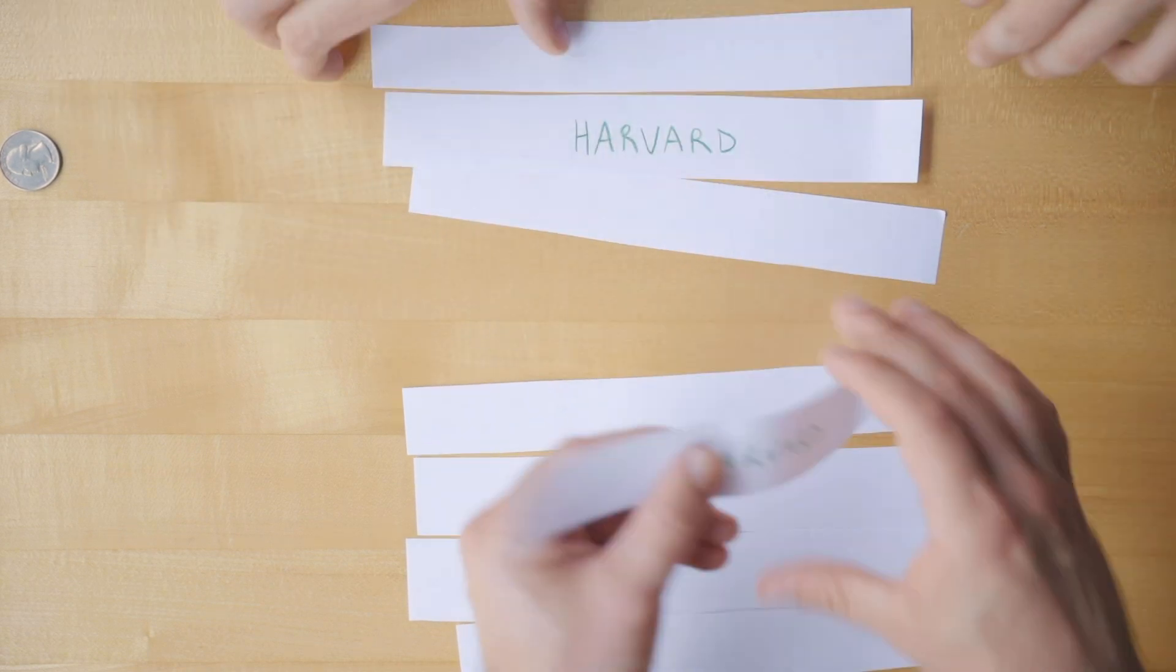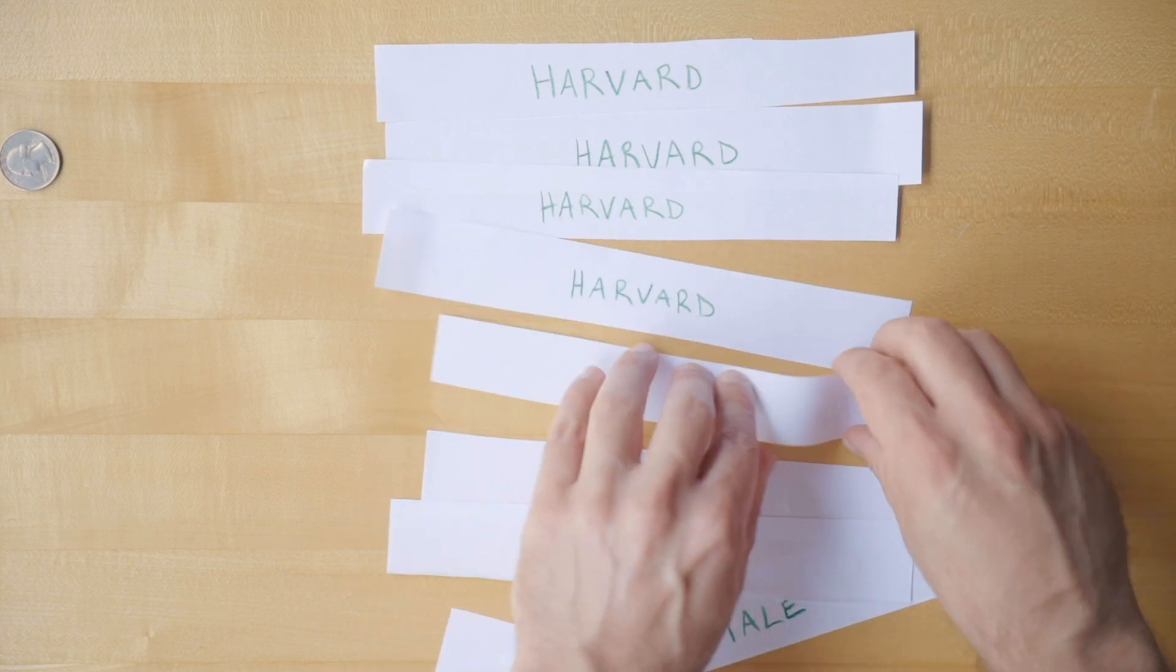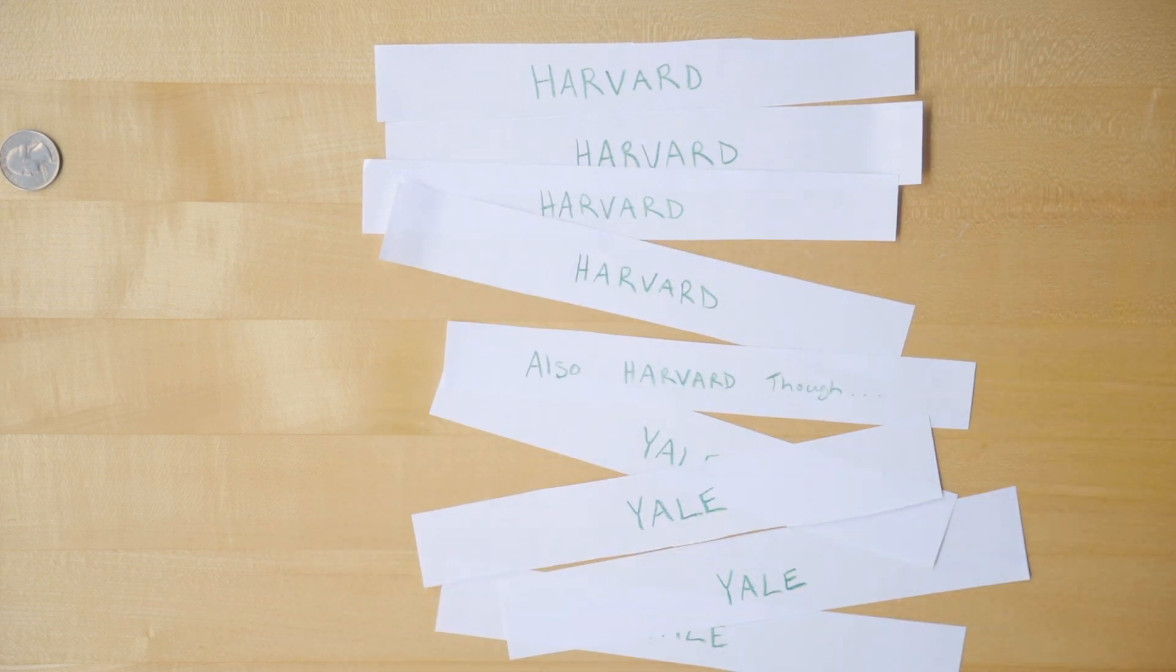Of these 9, 4 current justices have law degrees from Harvard, 4 have law degrees from Yale, and the other graduated from Columbia.